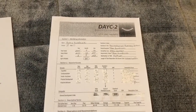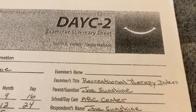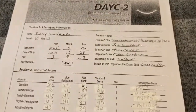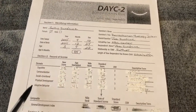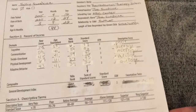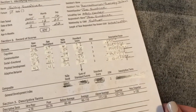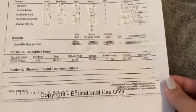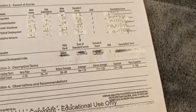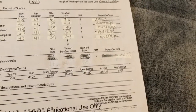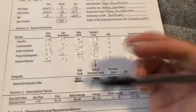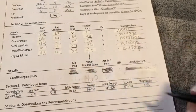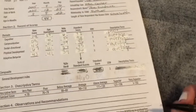After all domains are completed, we jump to the examiner's summary sheet. We fill out section 1 and the results for each domain — all results have been pre-filled for time purposes. Next, we calculate the General Development Index, or GDI, by adding together all standard scores for each domain. The sum of the standard scores is 460. We turn to Appendix E and find the related GDI score, which is 88.